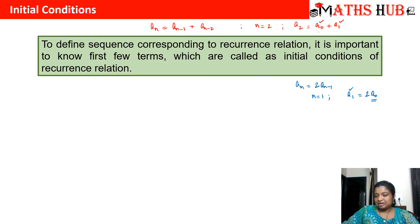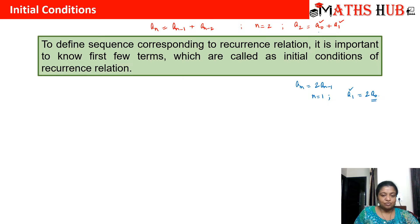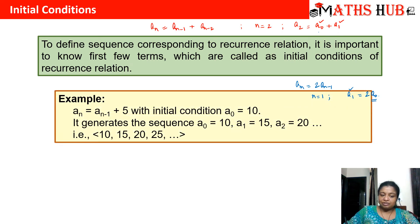These are called the initial conditions of the recurrence relation. Whenever you are solving a recurrence relation, if these initial conditions are not given, you cannot determine the terms of the sequence. To define the sequence corresponding to a recurrence relation, it is always important to know the first few terms. If the relation depends on one term, you need one initial condition; if on two terms, you need two conditions, and so on.